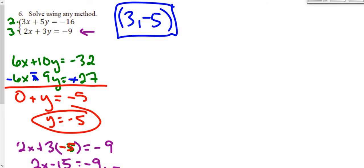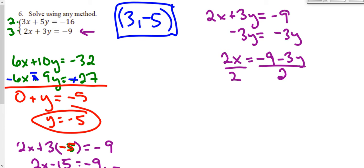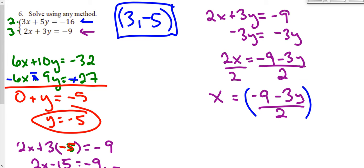I'll pick the bottom equation because it's got smaller numbers: 2x plus 3y equals negative 9. For substitution, I have to solve for one of my variables. I'll solve for x — moving 3y to the other side gives 2x equals negative 9 minus 3y, and dividing both sides by 2 gives x equals (negative 9 minus 3y) over 2. Now I'll take this and plug it into the other function everywhere I see the letter x.